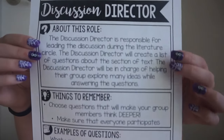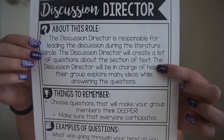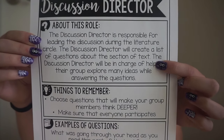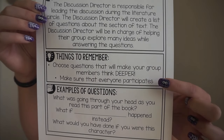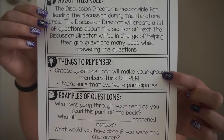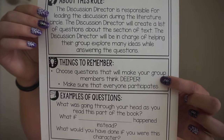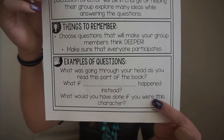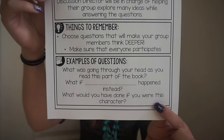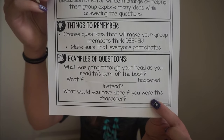I also created pages with more detailed descriptions of each role with an example for students to reference, especially if it's their first time doing a literature circle. For the discussion director, the top has information about the role — basically their job is to lead the discussion by coming up with a list of questions to ask their group. In the middle are a couple of things to remember: pick questions that make group members think deeper and make sure everyone participates. At the bottom there are example questions so if students get stuck these can guide their thinking.